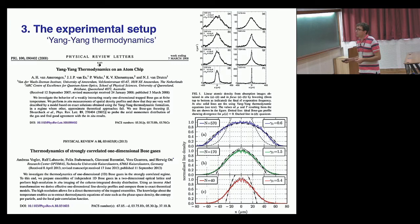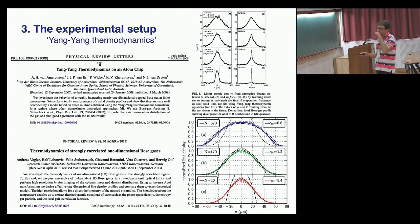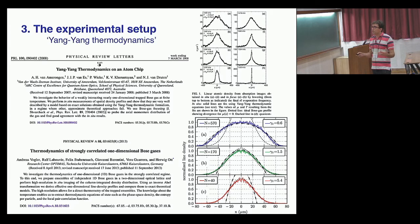This is not new: the paper that first did this, as far as I know, is 'Yang-Yang thermodynamics on an atom chip' from van Druten's group in Amsterdam. They prepared the gas at equilibrium in harmonic traps, measured in-situ density profiles, compared to thermodynamic Bethe ansatz, found good agreement — from weakly repulsive to strongly repulsive regimes, covering the full parameter space of the Lieb-Liniger model. This was an important paper: the first showing that Bethe ansatz is actually useful to describe experiment.